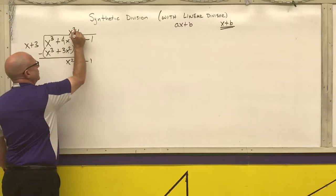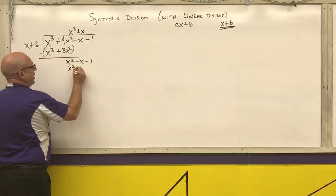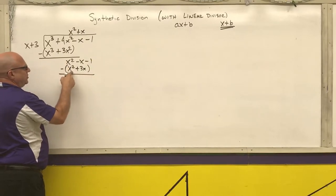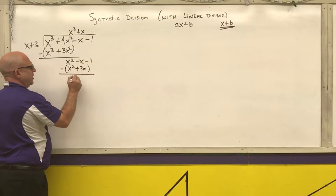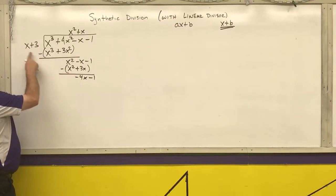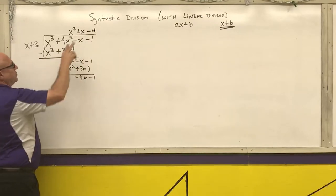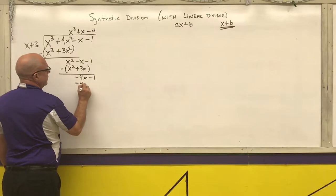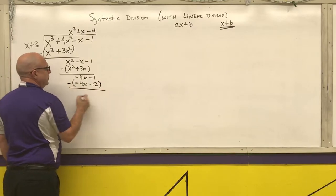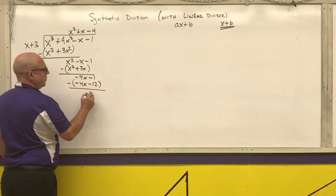X squared divided by x is x. Multiply: x times x is x squared, x times 3 is 3x. Parentheses and subtract. Any number minus itself is zero. Negative 4 times 3 is negative 12. Parentheses and subtract. Any number minus itself is zero. 1 minus negative 12 is 1 plus 12, which is 11.